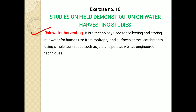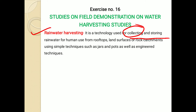Rainwater harvesting is a technology which is used for collecting and storing the rainwater. The rainfall obtained is first collected and stored in particular devices, for example in a pond, then in a barrel, then in a well. We collect and store rainwater for human use. This water is collected from rooftops — those rainfall drops on our house which are all collected.